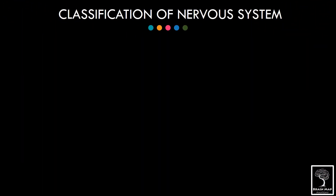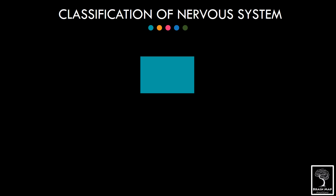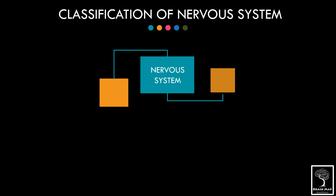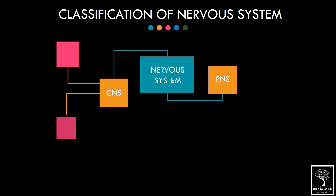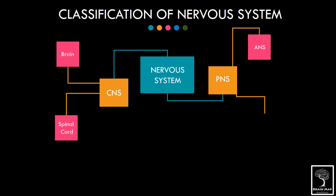Leaving that thought behind, we will now see the classification of the nervous system. The nervous system can be broadly classified into two: the central nervous system and peripheral nervous system. The central nervous system comprises the brain and spinal cord. The peripheral nervous system is again classified into the autonomic nervous system and the craniospinal part of the peripheral nervous system.